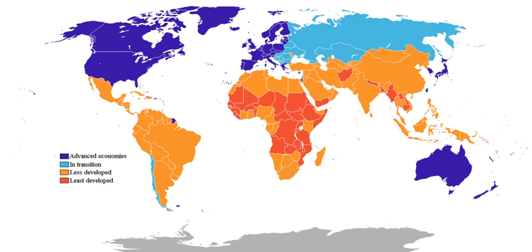This criterion would define developed countries as those with a very high HDI rating. The index, however, does not take into account several factors, such as the net wealth per capita or the relative quality of goods in a country. This tends to lower the ranking for some of the most advanced countries, such as the G7 members. According to the United Nations Statistics Division, there is no established convention for the designation of 'developed' and 'developing' countries in the United Nations system, and the designations are intended for statistical convenience and do not necessarily express a judgment about the stage reached by a particular country in the development process.